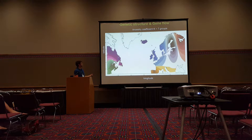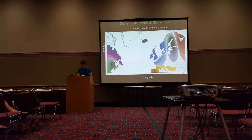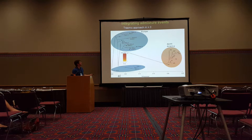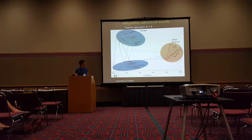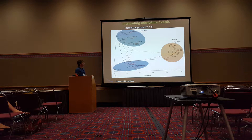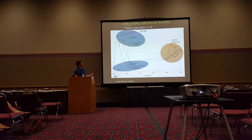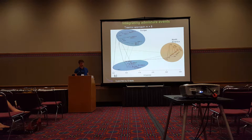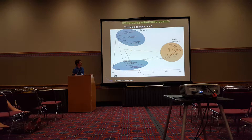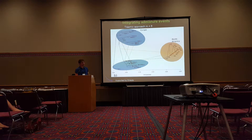Using a TreeMix approach, without migration we already explain more than 99% of the variation, but if we integrate migration edges for secondary gene flow, we improve the fit of the model. Interestingly, we find intercontinental gene flow, and this was supported by statistics indicating that all American populations were significantly admixed with the European population. This particular European population was a major source of admixture for all American populations.